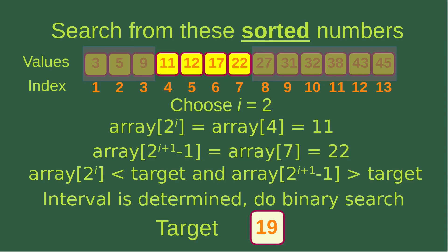Now we choose i equals 2. When i equals 2, the first element to consider is the fourth element, which is 11. The next element to consider is the seventh element, which is equal to 22. We can see that the left-hand element is smaller than the target and the right-hand element is larger than the target. So we are able to determine the interval and can do the binary search on that particular interval to find 19, because we are sure that the target lies inside that interval.